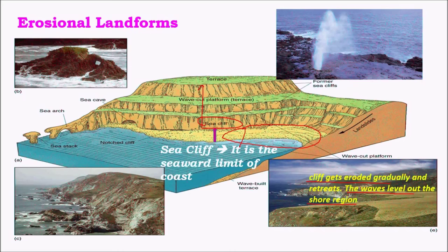A wave-cut platform is a platform formed due to successive erosion of sea cliffs. When the sea level was higher, a cliff formed; due to successive erosion and upliftment of the land, sea level has fallen, and we can see many sea cliffs one above the other, leaving a terrace-like structure. This is formed mainly due to differential erosion caused by subsidence of the sea or upliftment of the landform.